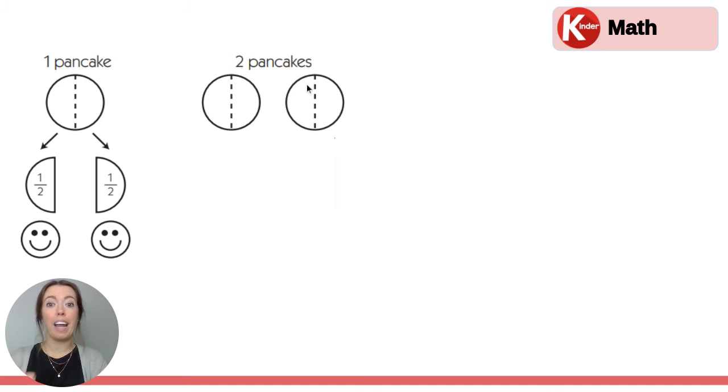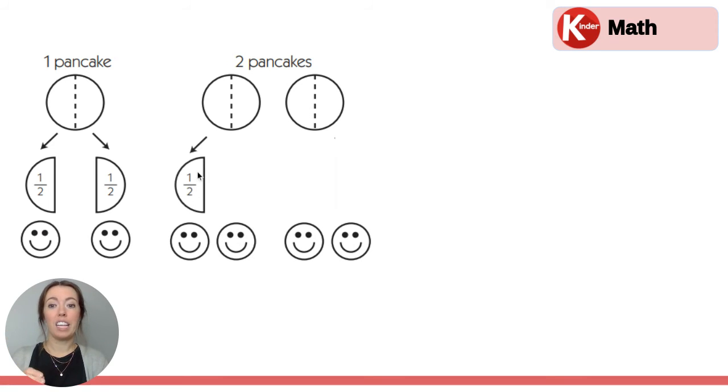Good! So when we had two pancakes, we cut them both the same way for four people. They each get half—half, one half, and one half.